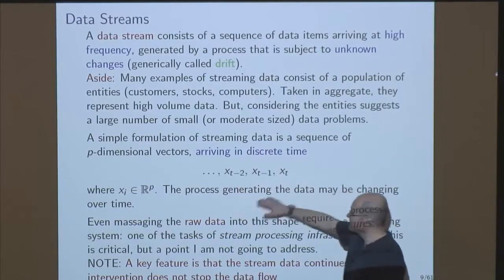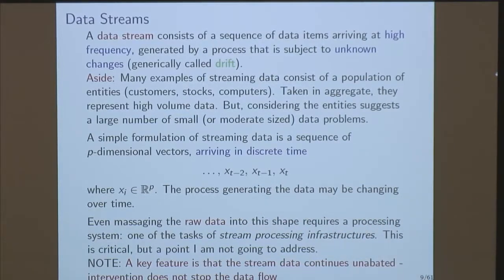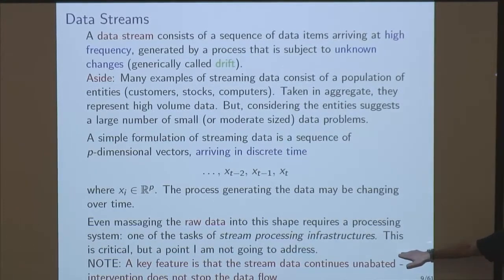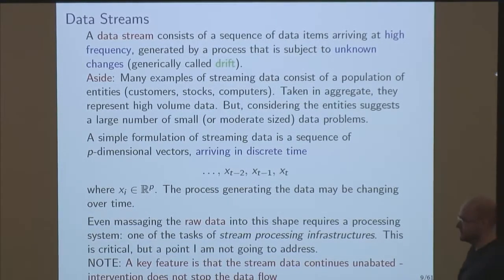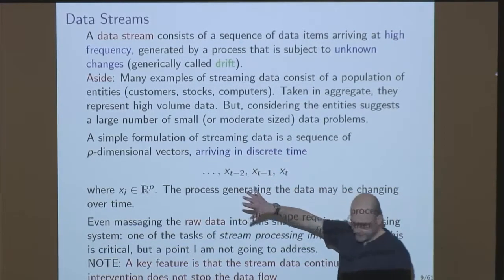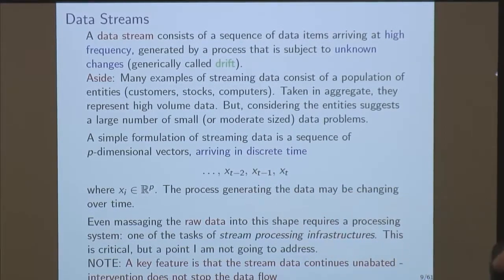These could be vectors, of course. To turn whatever you take off the wire into a vector requires a large amount of streaming effort. Stream processing infrastructures are popular. One thing I would say about streaming analysis compared to the historical roots of change point detection: the stream will continue. We're looking to find changes in it, and we can't go in and stop it.